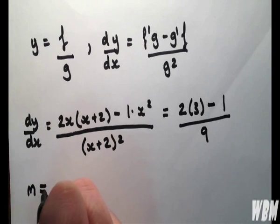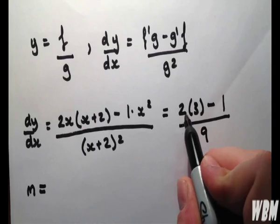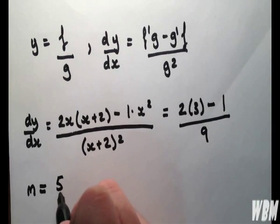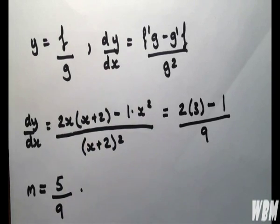So if we refer to this as m, then we have 2 times 3, which is 6, minus 1, we have 5 over 9.